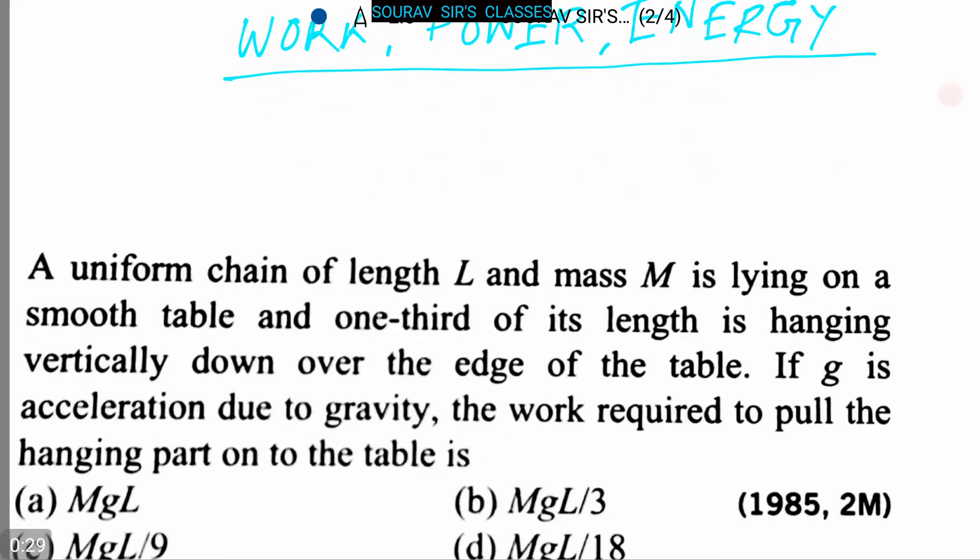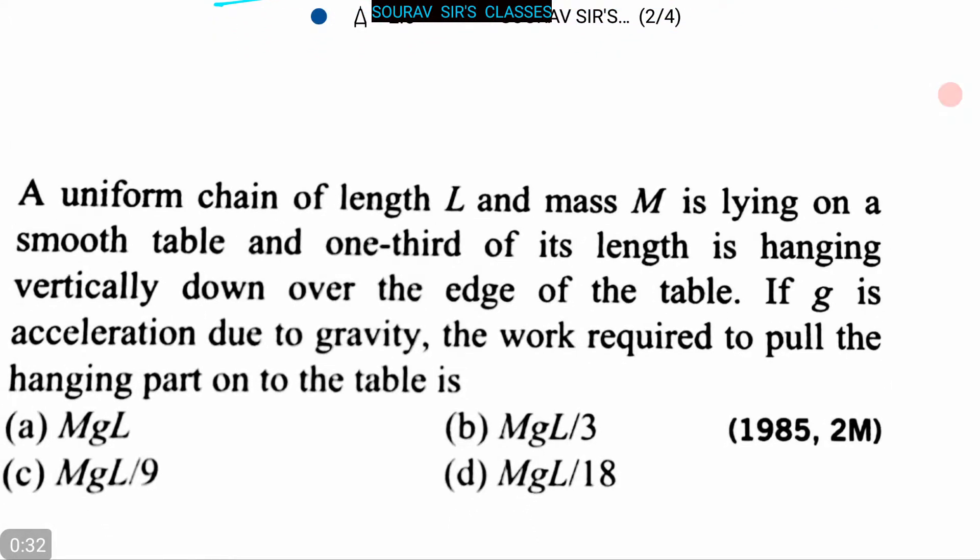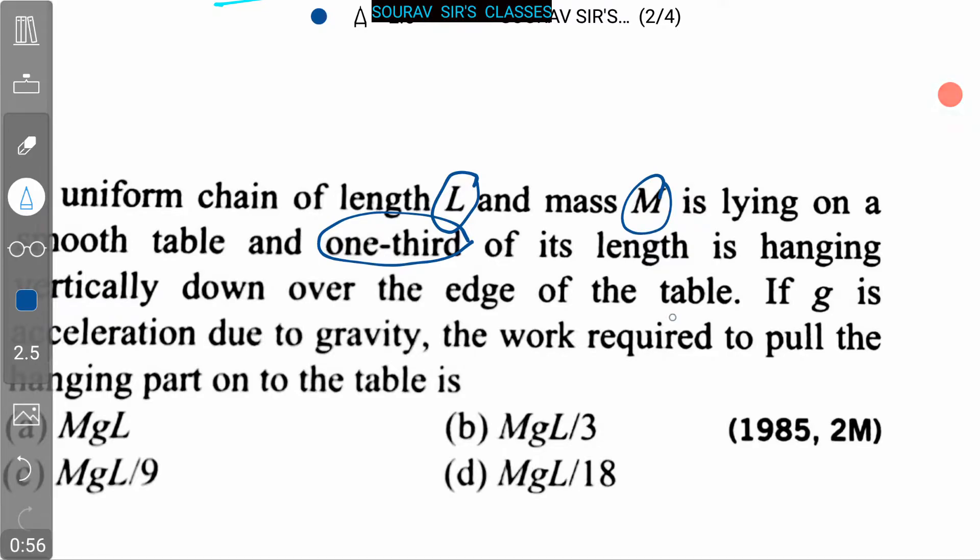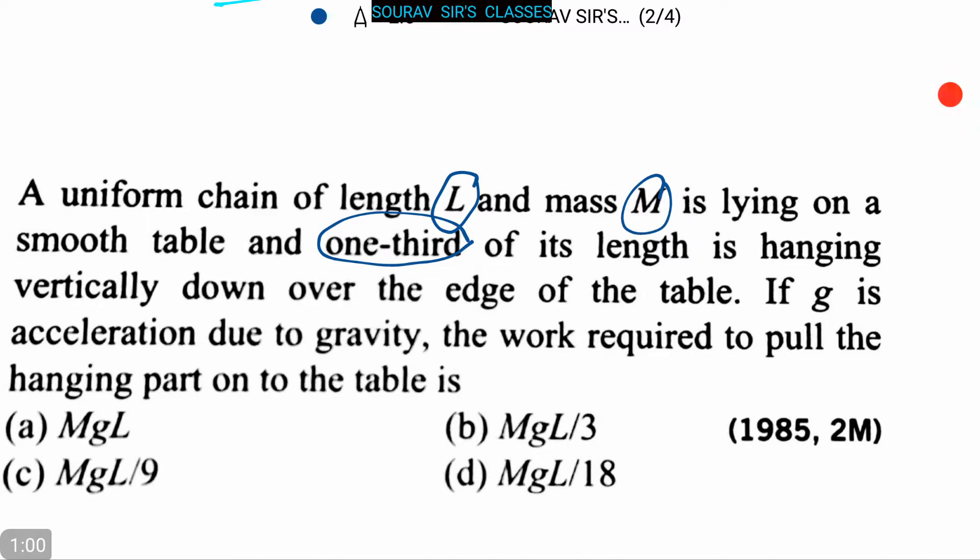Our first question is: A uniform chain of length L and mass M is lying on a smooth table, and one third of its length is hanging vertically down over the edge of the table. If g is acceleration due to gravity, the work required to pull the hanging part onto the table is: option A, MgL; option B, MgL/3; option C, MgL/9; and option D, MgL/18.